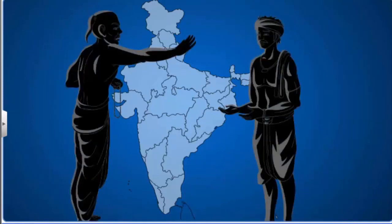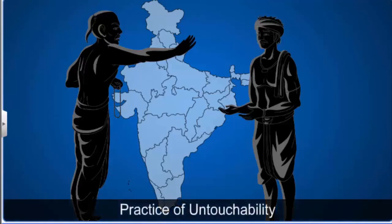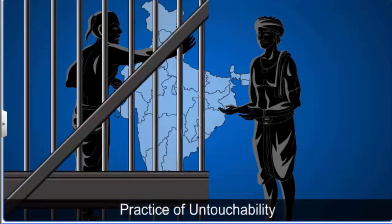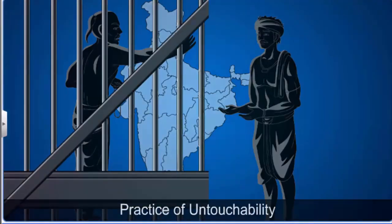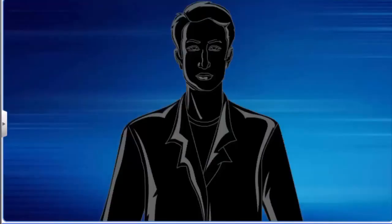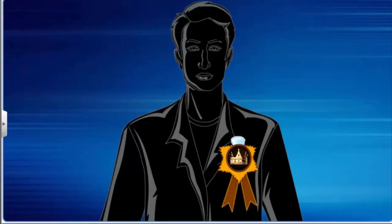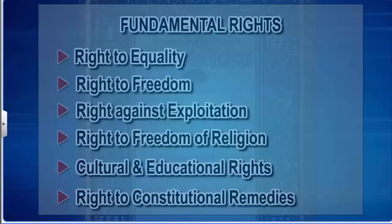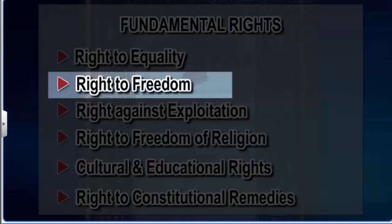In India, an extreme form of social discrimination is the practice of untouchability, which is especially rampant in remote villages and small towns amidst illiterate people. The Untouchability Offences Act 1955 states that practicing untouchability is a punishable offence. The right to equality also mandates the abolition of titles awarded by a foreign state such as Rai Bahadur or Khan Bahadur.